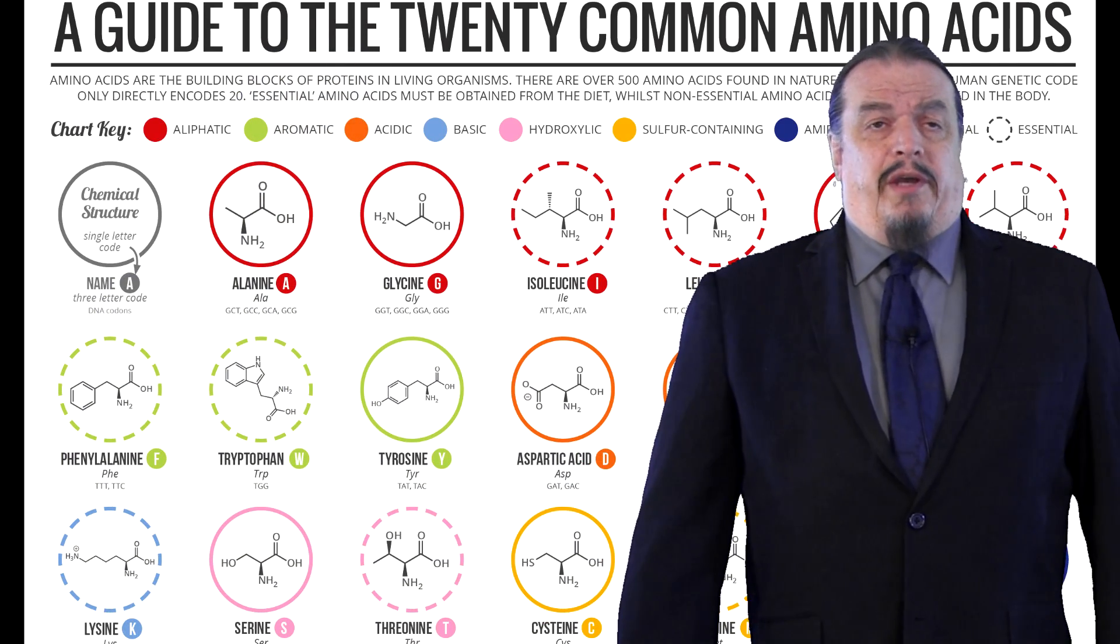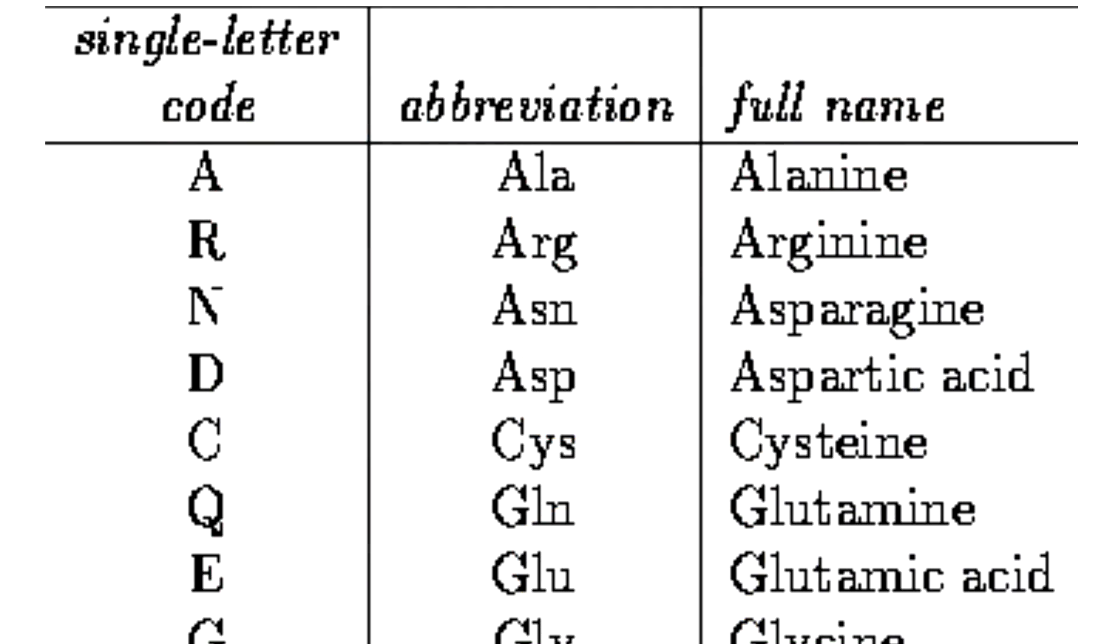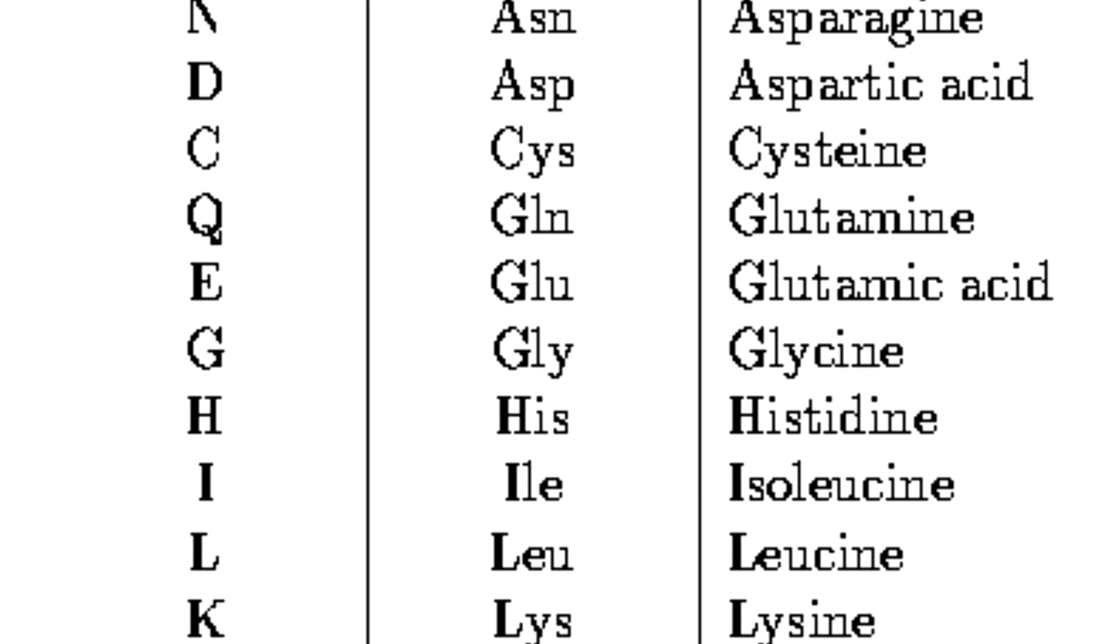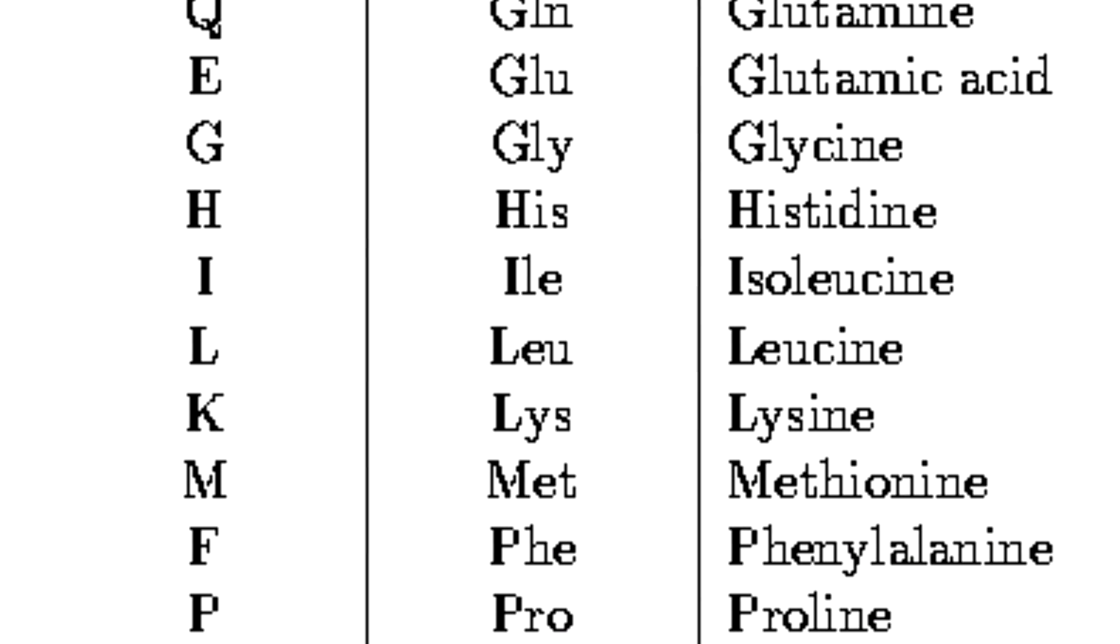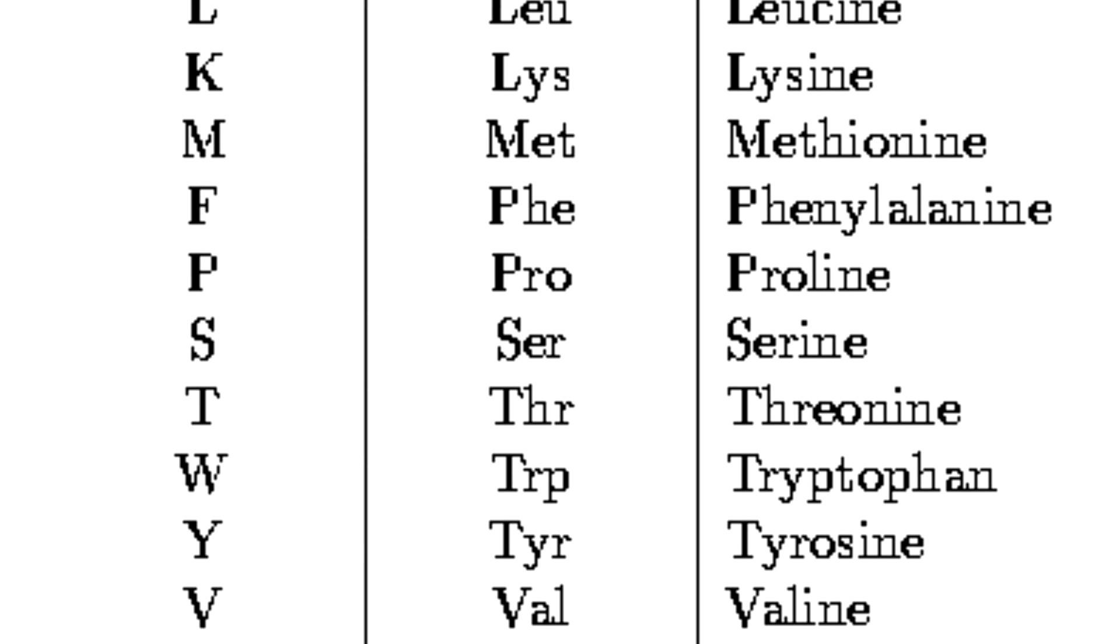There are some 20 amino acids that make up the proteins that determine your human traits. Think of them like the 26 letters of the alphabet. These 26 letters form many different words. Likewise, the 20 amino acids combined in different configurations to make up many different proteins.